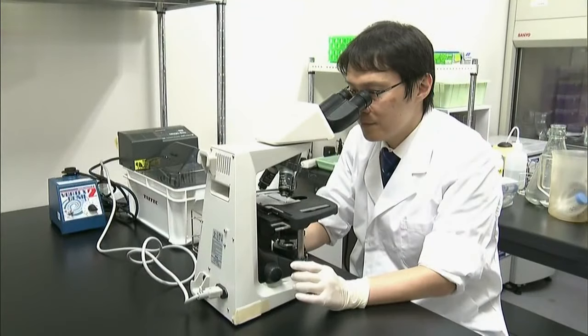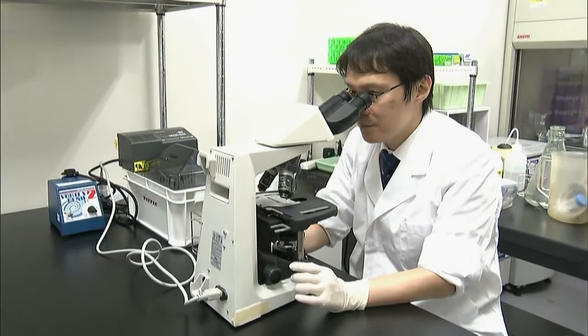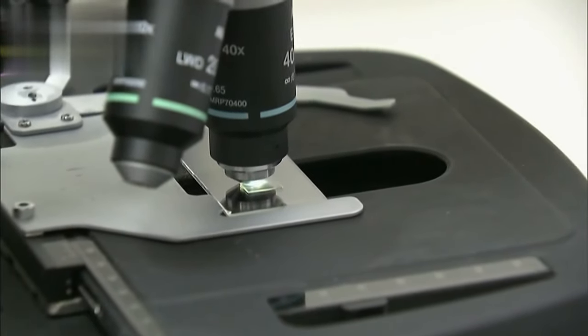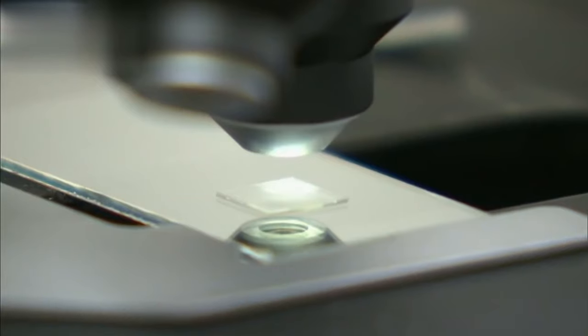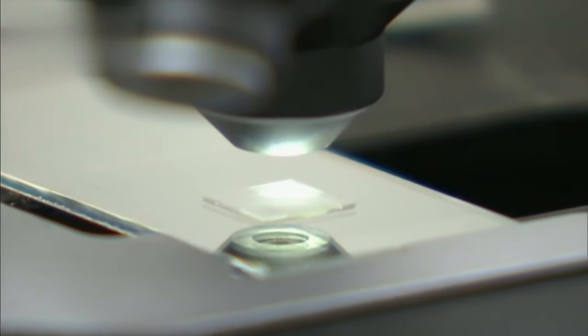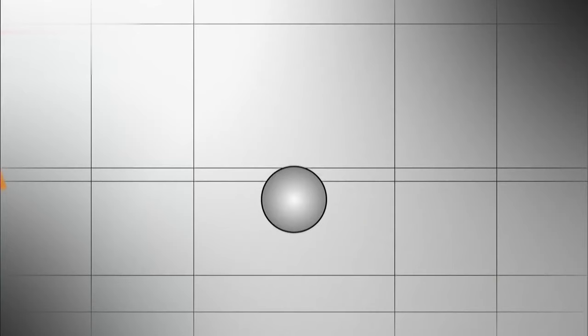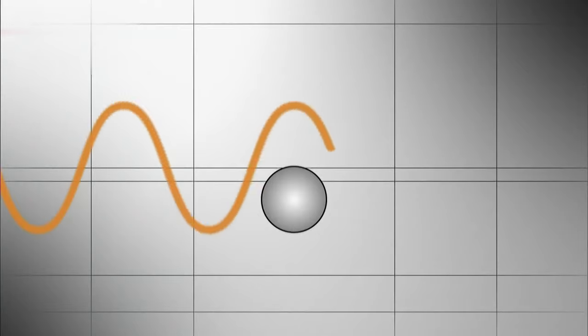What does this mean exactly? In order to view a sample in an optical microscope, light is shone on it. But light has a wavelength. If the sample is smaller than the wavelength, the wave passes over it and the sample is not visible.